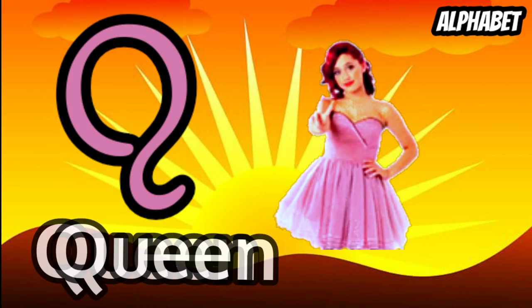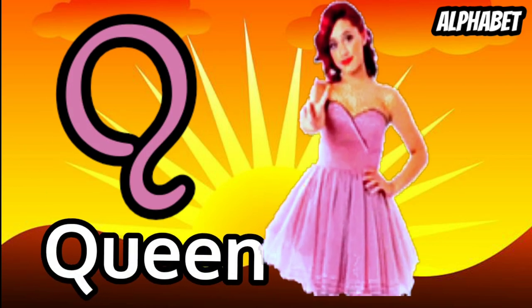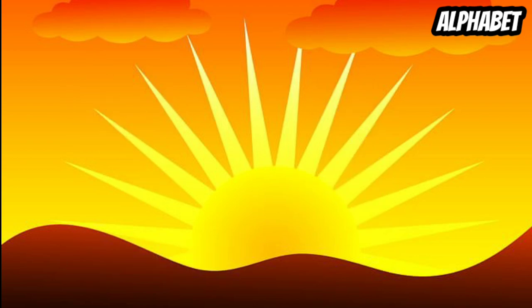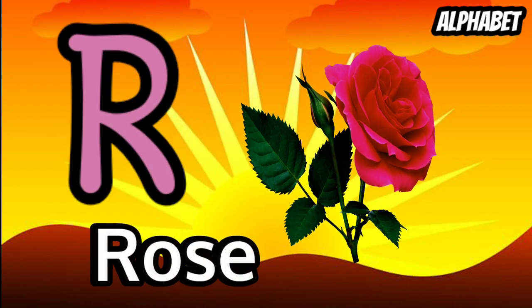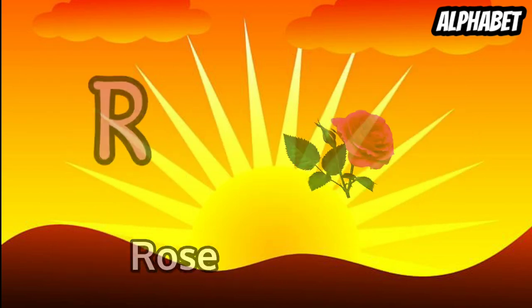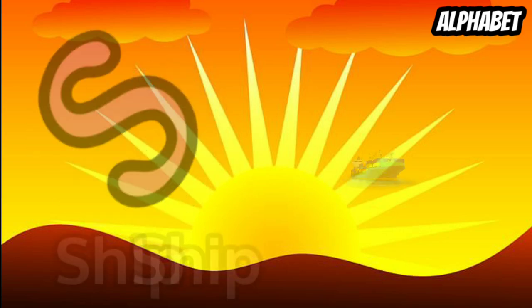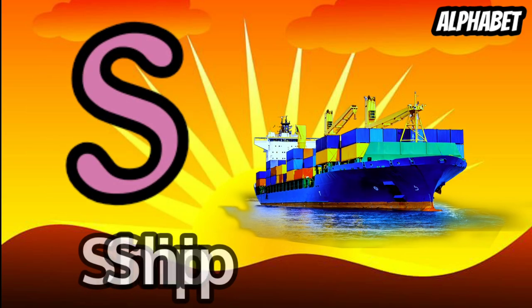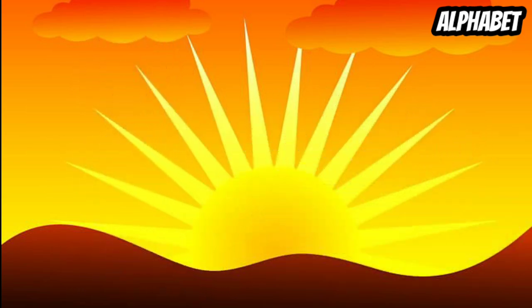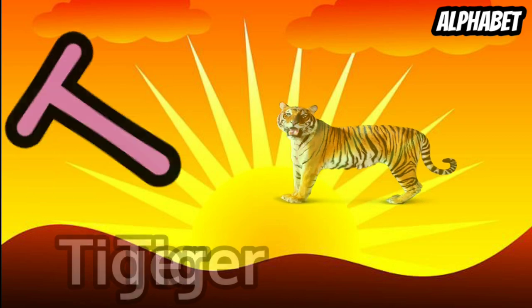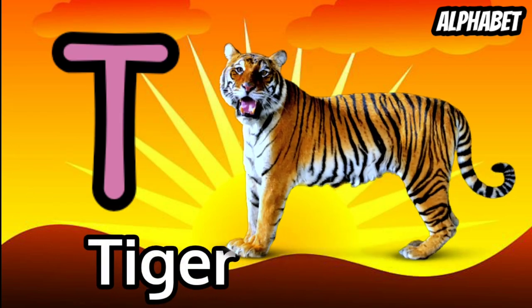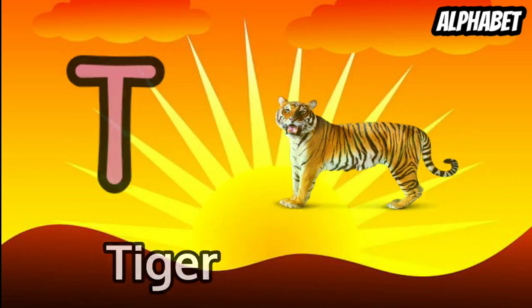E for queen, R for rose, S for ship, T for tiger.